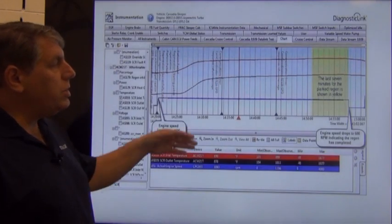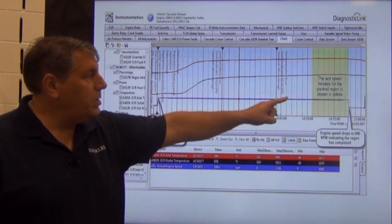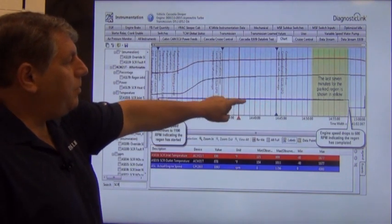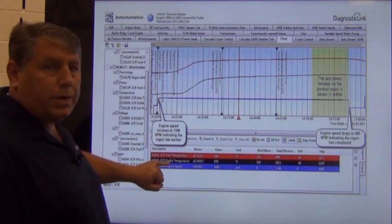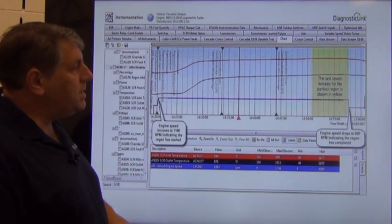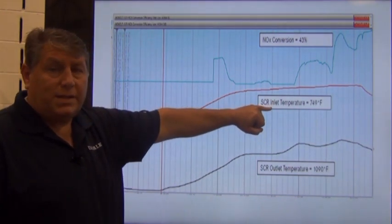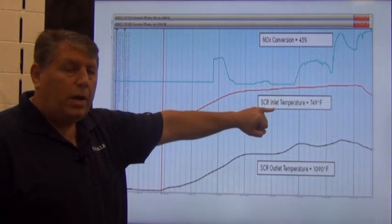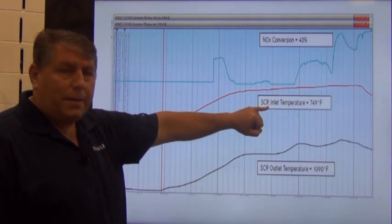We're going to look back at our original log file, look at the last seven minutes of the parked region, and compare our SCR inlet temperature and our SCR outlet temperature. What we're trying to see is, is the SCR inlet temperature any more than 68.4 degrees colder than the outlet temperature? If it is colder by that temperature, then that indicates there's something internally wrong.